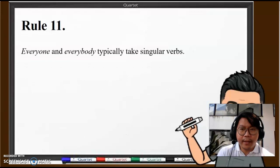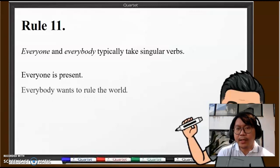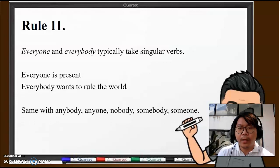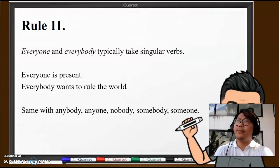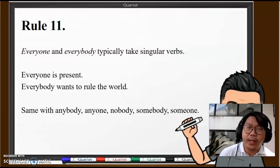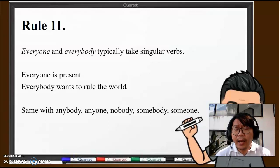Rule number 11: "Everyone" and "everybody" typically takes singular verbs. So "Everyone is present," "Everybody wants to rule the world." It's the same rule with the words "anybody," "anyone," "nobody," "somebody," "someone." Some people get confused here because obviously when we say "everyone," that's a lot of people, right? If I say "everyone in school," I'm talking about all of the teachers and students. But "everyone" is a singular concept, it's a single unit, so it's paired with singular verbs. So no need to be confused there.